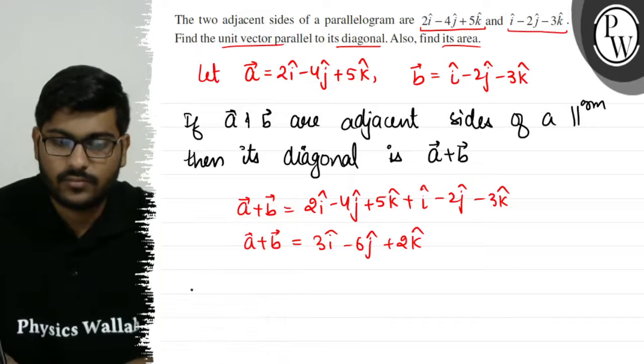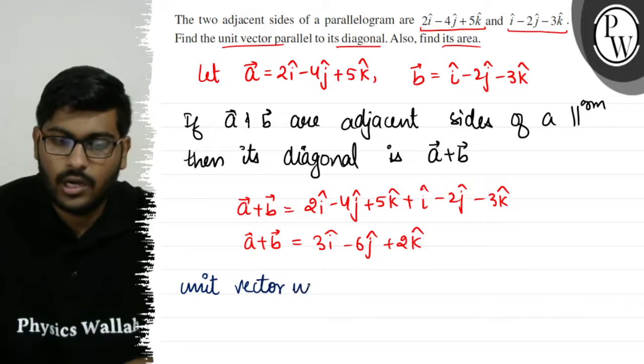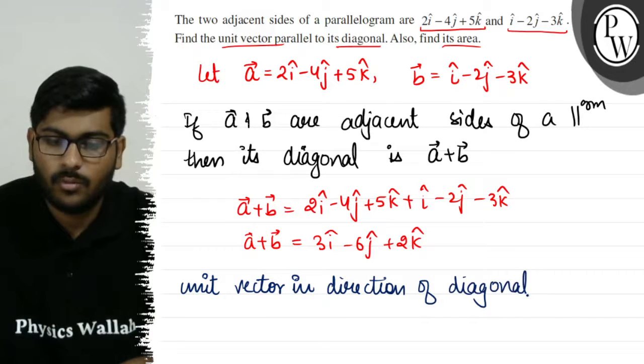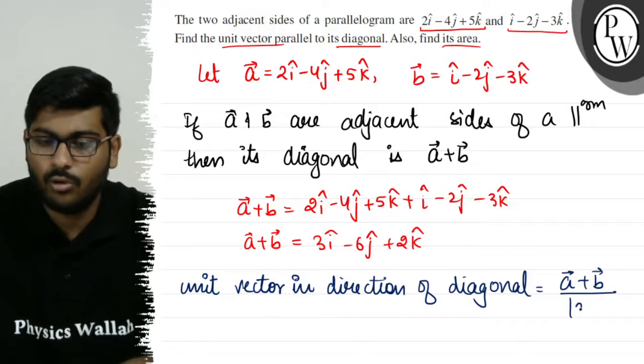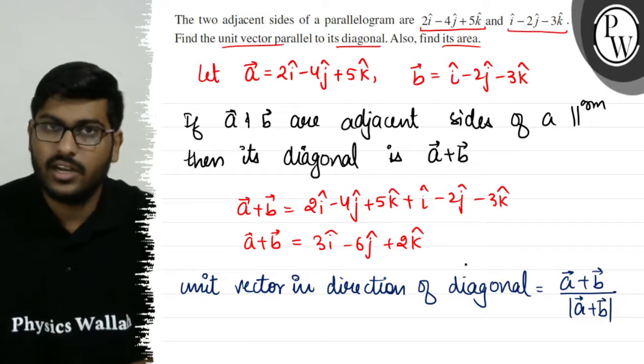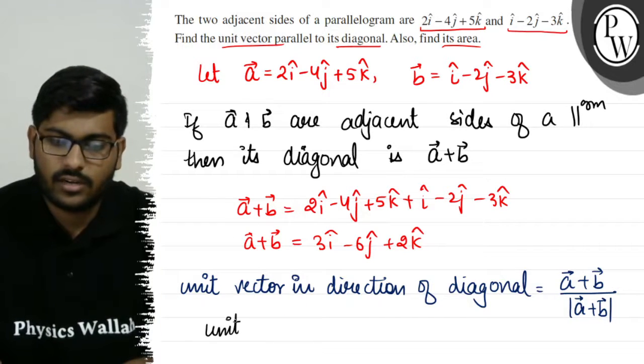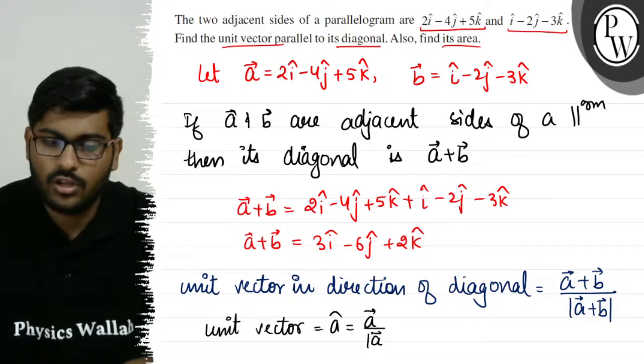Now unit vector in direction of diagonal will be what? A vector plus B vector divided by the modulus of A vector plus B vector. This gives us the unit vector because we know that unit vector is represented by A-cap, which equals A vector divided by the modulus of A vector.